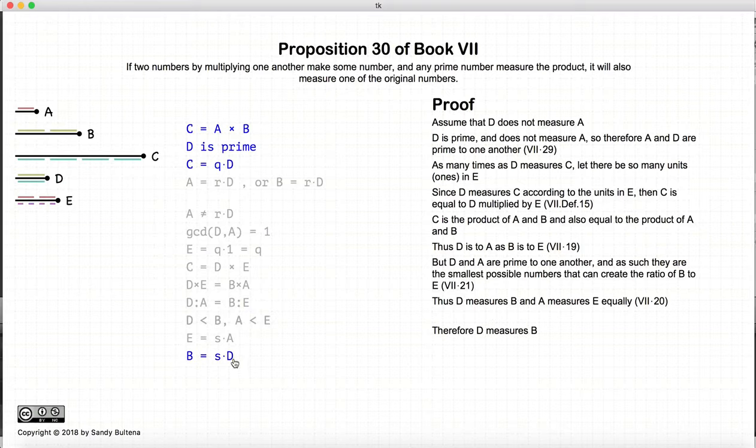So now we have shown that D measures B, and that's what we were trying to show all along. So to recap, we have two numbers A and B, and we've multiplied them together to make a third number C. D, which is prime, measures C, and D, if it doesn't measure A, measures B. And that's it for this proof.